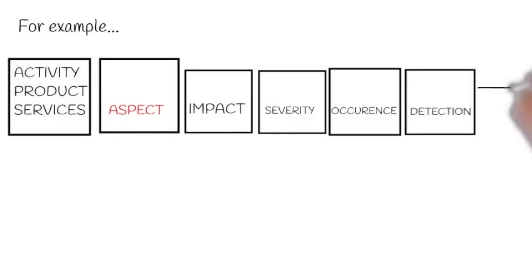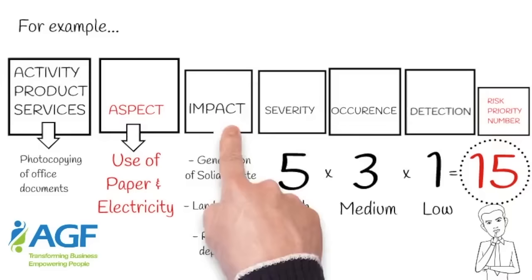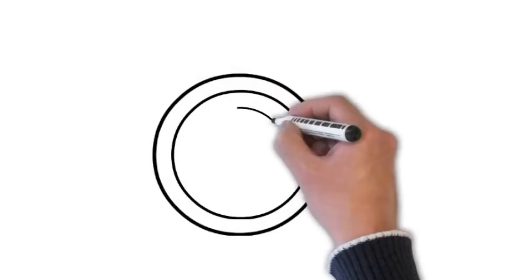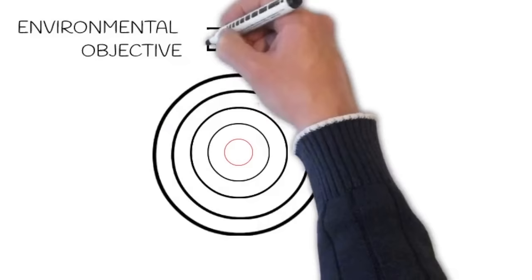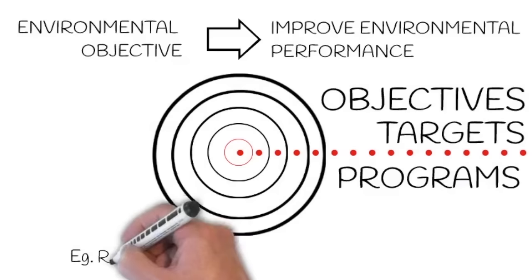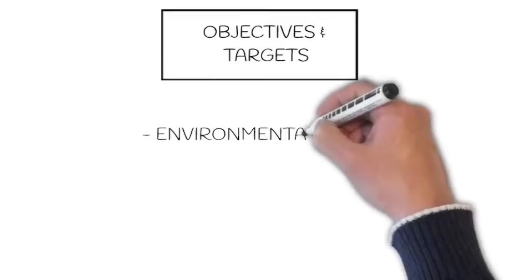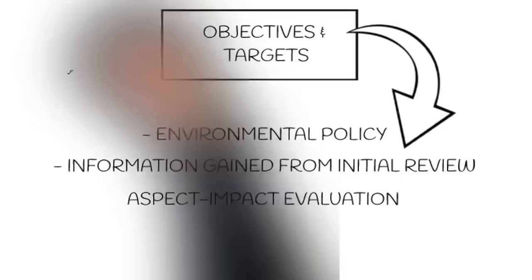Aspects with high-risk priority numbers should be assigned specific objectives, targets, and programs. Environmental objectives are the overall goals of the business organization in improving environmental performance through its environmental management system. Environmental targets provide short-term goals on the way to achieving these overall objectives — one objective can have several targets. For example, one target could be to reduce waste going to landfill by 10% in the first year. Your objectives and targets should be based on your environmental policy, information gained from your initial review, and your aspect-impact evaluation. They should aim to address any significant environmental aspects and should incorporate specific legal requirements.